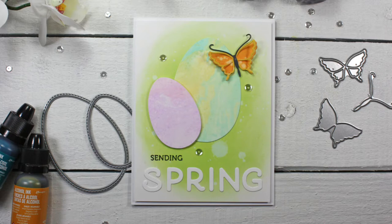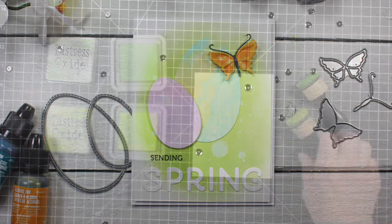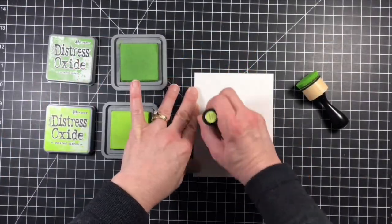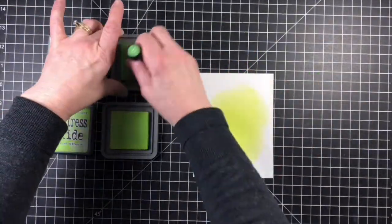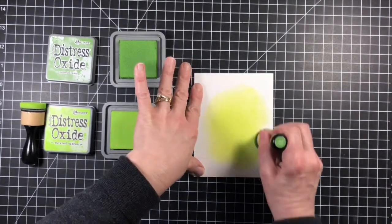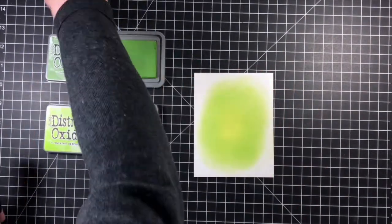Hi there, it's Tracy here and I have a card to share with you to celebrate the beginning of spring. I started off by creating my grassy background by blending some Twisted Citron and Mowed Lawn Distress Oxide inks onto a panel of Bristol Smooth cardstock.